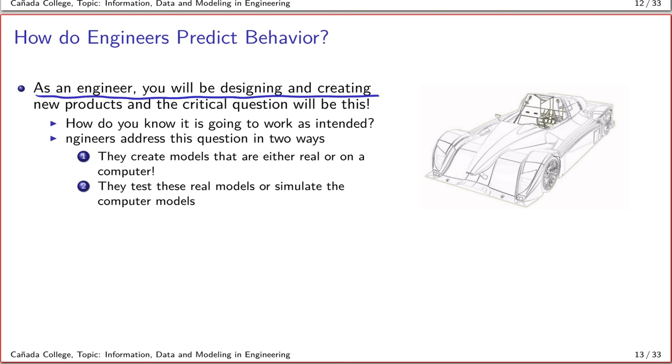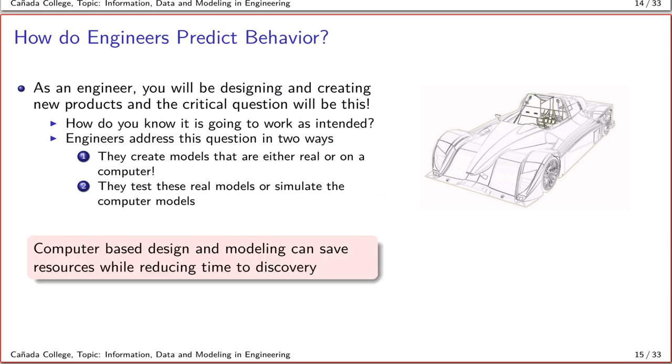This is one of the fundamental tasks of an engineer. You may be involved with designing and creating new products, and the critical question is: how do you know what you make is going to work as intended? Engineers address this question in two ways. First, you can create a model, either a real full-scale or smaller-scale model, or you can create this model on a computer. The next step is to test the model and once it passes these steps, you can go ahead and create the actual device.